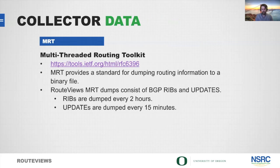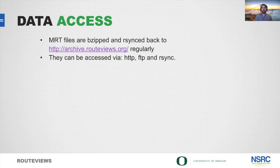Our data collection and archival is based on MRT data — the Multi-threaded Routing Toolkit — which is an IETF standard that's been around for a while and is supported by many different vendors. MRT provides a standard for dumping routing information to a binary file and is very compact, allowing us to archive a large amount of data in relatively small storage space. Route Views MRT dumps consist of BGP RIBs and updates: RIBs are dumped every two hours and updates every 15 minutes.